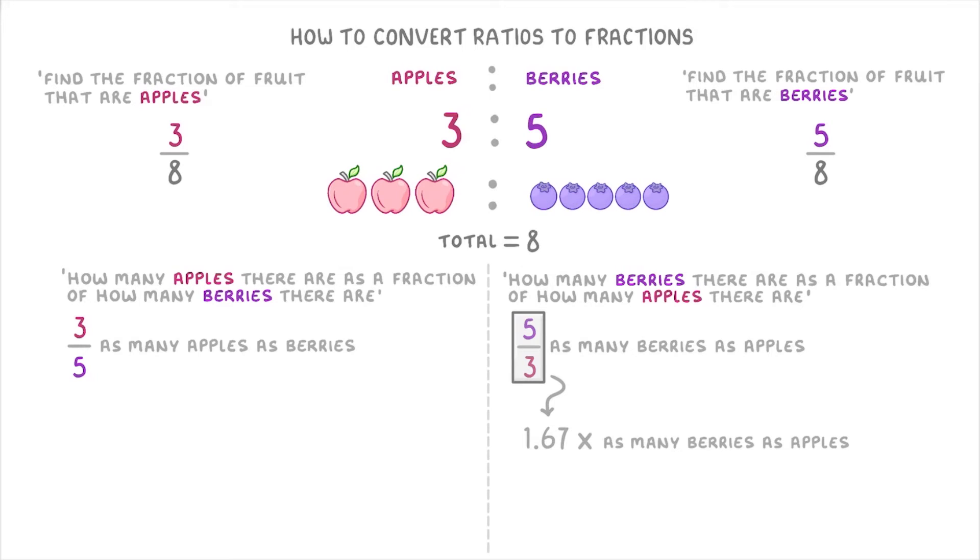And we can see that this is true, because if we take the number 3, which is how many apples we have, and multiply it by 1.67, we get 5. Which is what we expected, because we know that for every 3 apples, we have 5 berries.